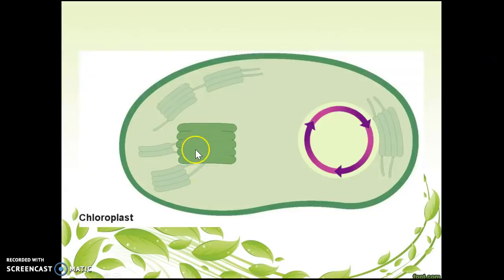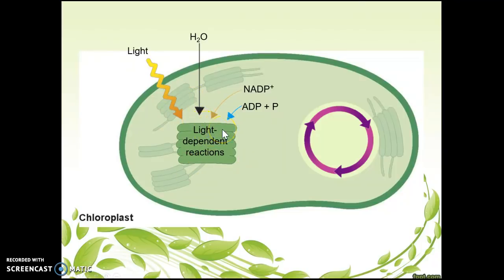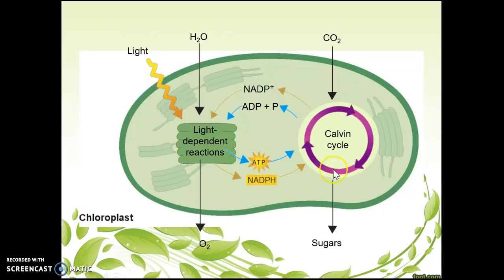Looking at the chloroplast diagram: we've got our grana, which are the stacks of thylakoids — each individual stack is a thylakoid — and we've got our stroma. The grana and thylakoids collect the light and the water. These are my light-dependent reactions because they depend on the light — they can't occur unless light comes in. They create oxygen and also create an important molecule called ATP, which is energy. The light-independent reactions — the Calvin cycle — require this ATP energy.